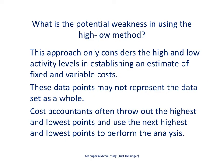There are some potential weaknesses in using the high-low method. This approach, first of all, only uses the highest and the lowest level of activity to establish an estimate of fixed and variable costs. So if we have 12 months worth of data, like we did in the example here, that we are using to estimate our total fixed and variable cost per unit, we are only using two data points, and they happen to be the most extreme data points, and we ignore the other 10 data points. So that is a weakness with the high-low method.